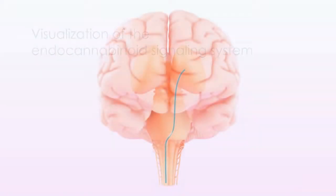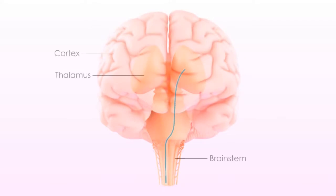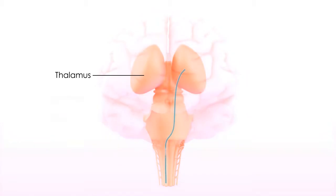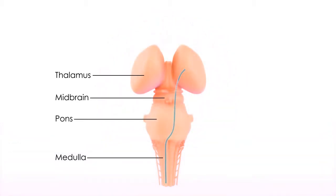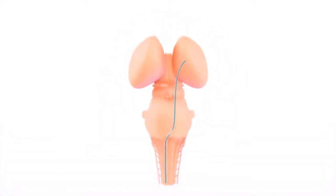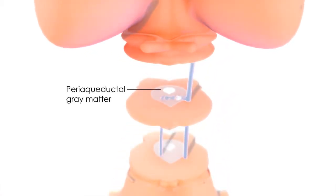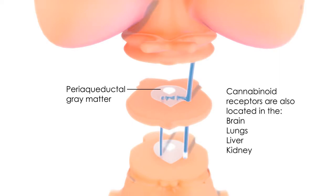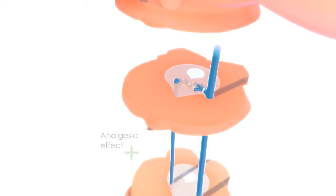In the normal transmission of pain, ascending nociceptive signals travel up the spinal thalamic pathway to the thalamus where they are processed and relayed to cortical and other areas. The ascending pathway also relays to the periaqueductal gray matter, an important part of the descending pain modulating system where specific cannabinoid receptors are located. Stimulation of the periaqueductal gray is known to produce an analgesic effect.